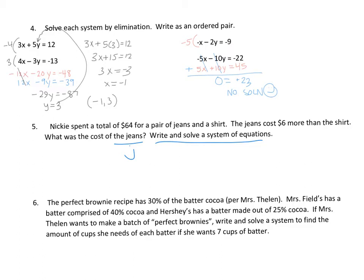So you could solve it different ways, but we're working on solving a system. So we want to set up two equations. So I know I have jeans, my variable, and shirt. And total is jeans plus shirt equals 64. But then the jeans cost $6 more than the shirt. So that means jeans have to be $6 plus the cost of the shirt. So here are my two equations.